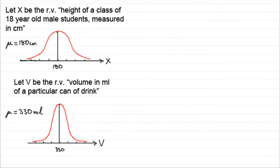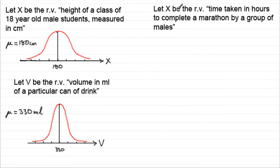Now suppose you had this distribution. Let X be the random variable time taken in hours to complete a marathon by a group of males. Well, that's going to be a distribution, I would have thought, something like this, centered around the mean time. There's going to be a lot of slow runners and very quick runners, the elite end.